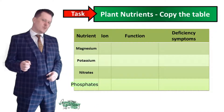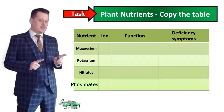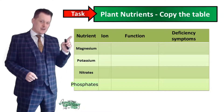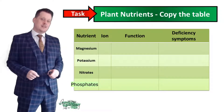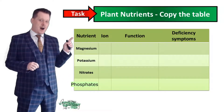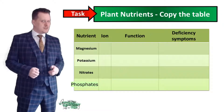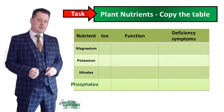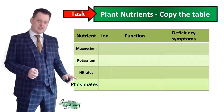Before we talk about any of these nutrients we need to get down a table. It has four headings and goes down five lines. Our four headings are nutrient, ion, function, and deficiency symptoms. The four nutrients we're going to be looking at are magnesium, potassium, nitrates, and phosphates.